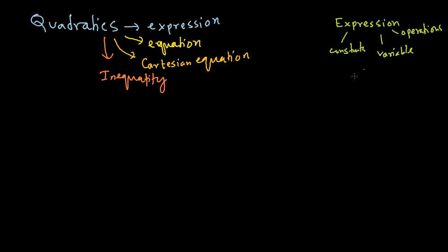A quadratic expression looks like this: some constant times x squared, plus another constant times x, plus another constant. This is the standard quadratic expression. It's a good idea to know the definition of a polynomial, because a quadratic expression is basically a polynomial expression — a second degree polynomial expression to be more precise.